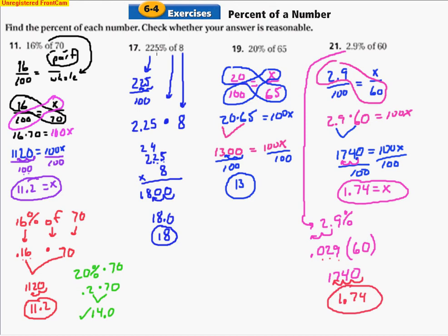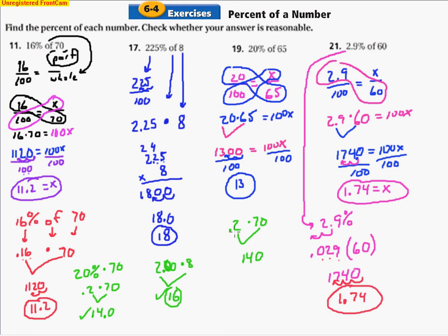For 225% of 8: that percent is big, but let's round down to 200%. That's just 2 times 8, which gives 16. 16 is pretty close to 18, so that checks out. For 20% of 65: let's round 65 up to 70. So 0.2 times 70 gives 14. That's pretty close to 13, so that's reasonable.